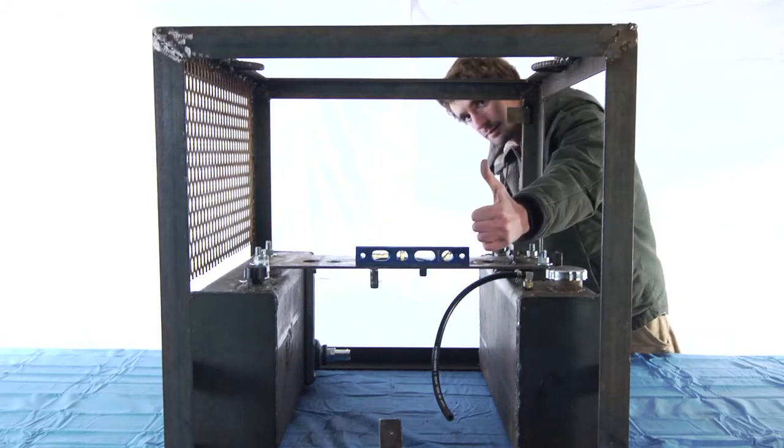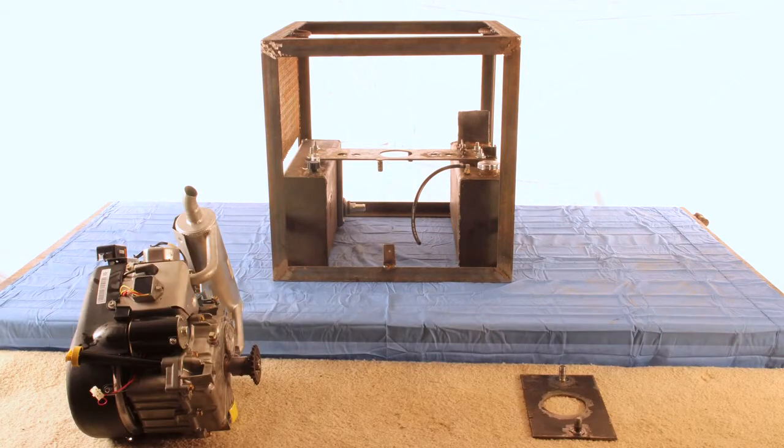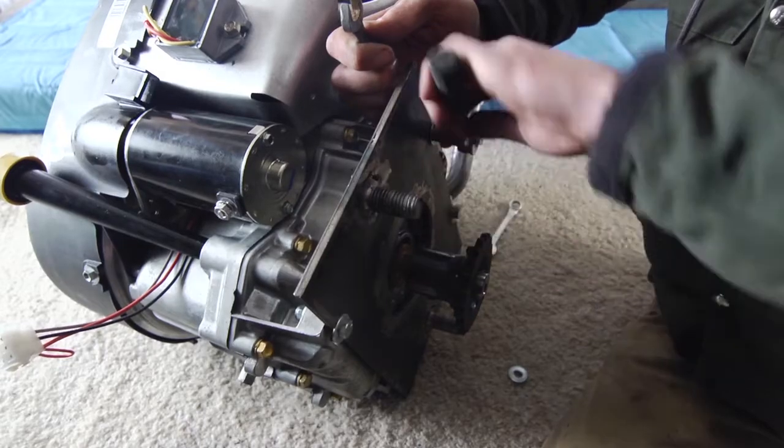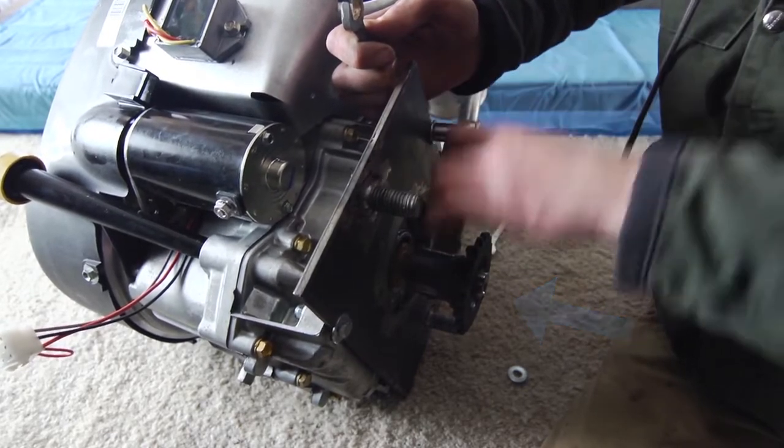Next, attach the engine interface plate to the base of the engine by bolting on the four side holes. Then, fit the engine coupler through the plate's hole.